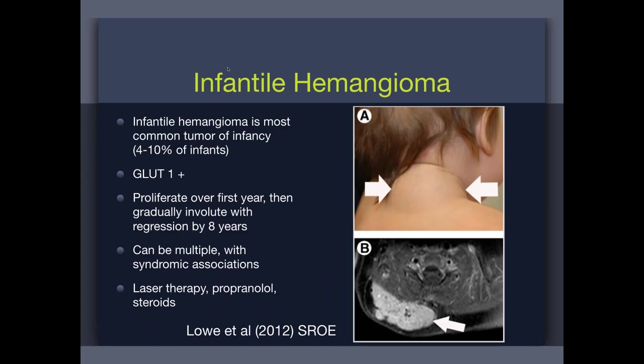What do you do for infantile hemangiomas? Often nothing, because they'll regress. You can give propranolol, and sometimes they're surgically excised if they're on the face. Propranolol was a serendipitous discovery by NICU doctors in France treating infants with propranolol for cardiac disease — they observed that the ones who had hemangiomas showed regression of their hemangiomas. So propranolol was discovered to speed up the shrinkage of hemangiomas. Infantile hemangiomas are the dominant entity in the vascular tumor column; the other entities are much rarer and are invoked more often than they should be.